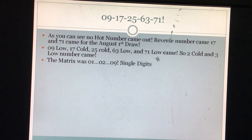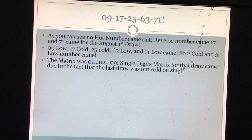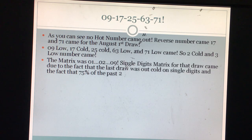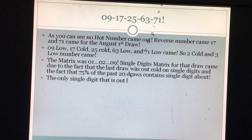So the ratio from cold to no number are 2 to 3. The matrix was 01, 02, 03, 04, 05, 06, 07, 08, and 09. As you can see it went back to the single digit due to the fact that 75% of the past 20 draws contains single digit. And sticking with single digit for your next draw or for your most draw would have increased your chance of hitting at least one number out of the 5 winning numbers. The only single digit that is out last 20 draws is 01. Keep that in mind.